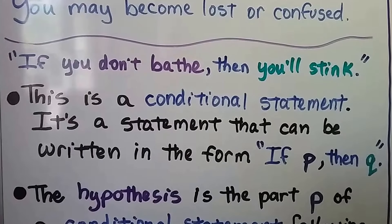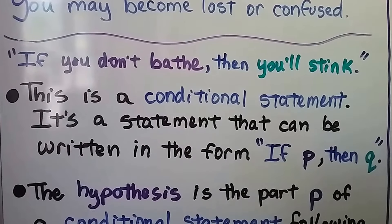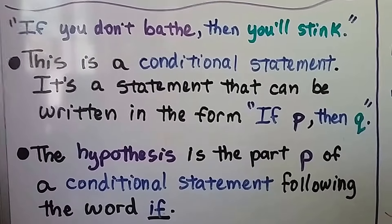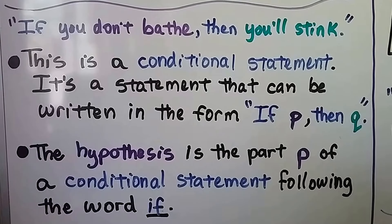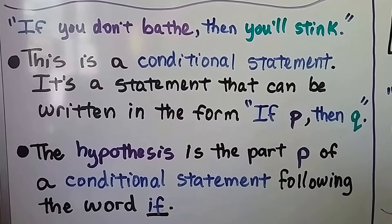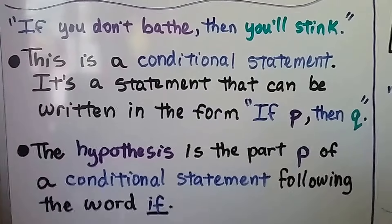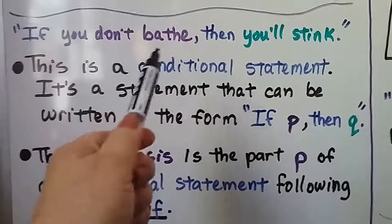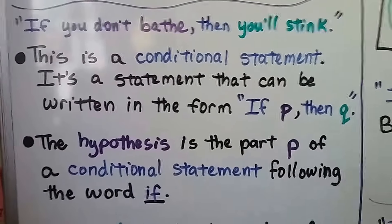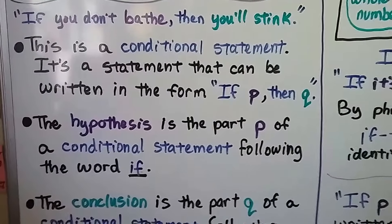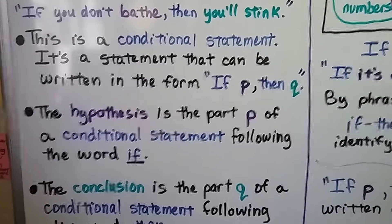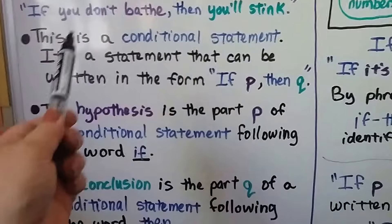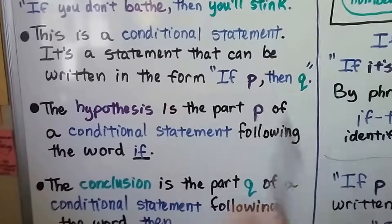It's a statement that can be written in the form if p, then q. The hypothesis is the part p — the purple part, 'you don't bathe' — of a conditional statement following the word if. The conclusion is the part q of the conditional statement following the word then: 'you'll stink.' Hypothesis is 'you don't bathe.' Conclusion is 'you'll stink.'